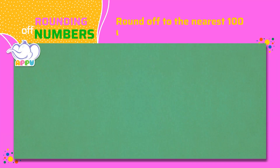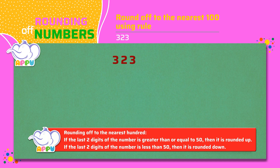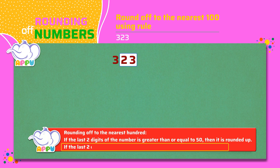Round off to the nearest hundred using the rule. 323. To round off to the nearest hundred, we consider the last two digits of the number, which is 23. If the last two digits of the number is less than 50, then it is rounded down. So 323 is rounded down to 300.